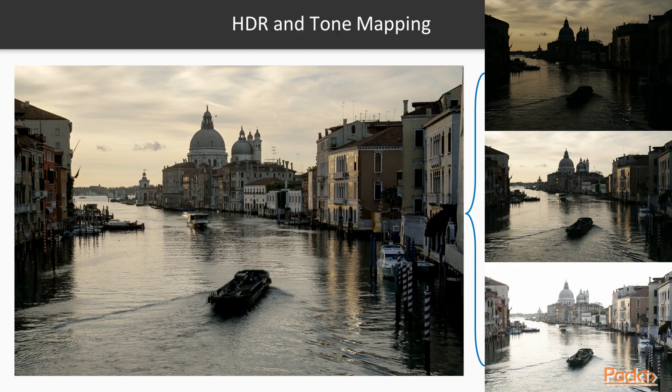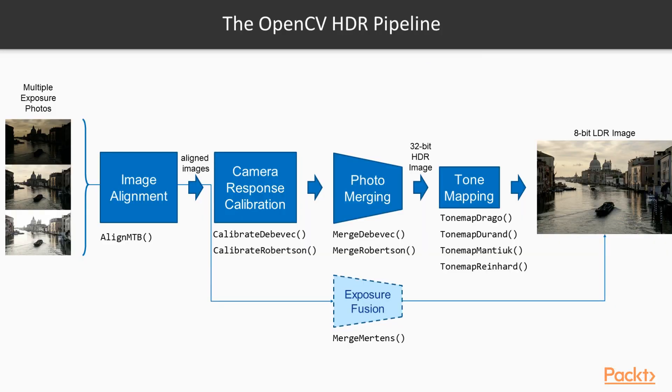Additional complexities arise when the camera or objects in the scene move between shots, since images with different exposures should be registered and aligned. We will also demonstrate an alternative approach called exposure fusion, that produces a low dynamic range image directly from multiple exposures, without generating an HDR image first. The OpenCV HDR pipeline consists of several stages.